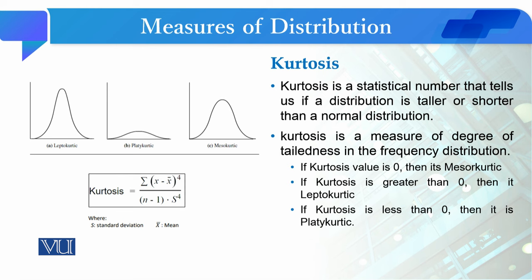دوسرا measure تھا kurtosis۔ Kurtosis is a statistical number that tells us if a distribution is taller or shorter than a normal distribution۔ Normal distribution جو ہوتی ہے وہ ایک shape میں ہوتی ہے جسے ہم mesokurtic کہتے ہیں۔ اس shape سے دو shapes اور ہو سکتی ہیں: اگر data flatten ہو جائے تو اس shape میں آجائے جسے platykurtic کہتے ہیں، اور اگر taller ہو جائے تو اس shape میں آجائے جسے leptokurtic کہتے ہیں۔